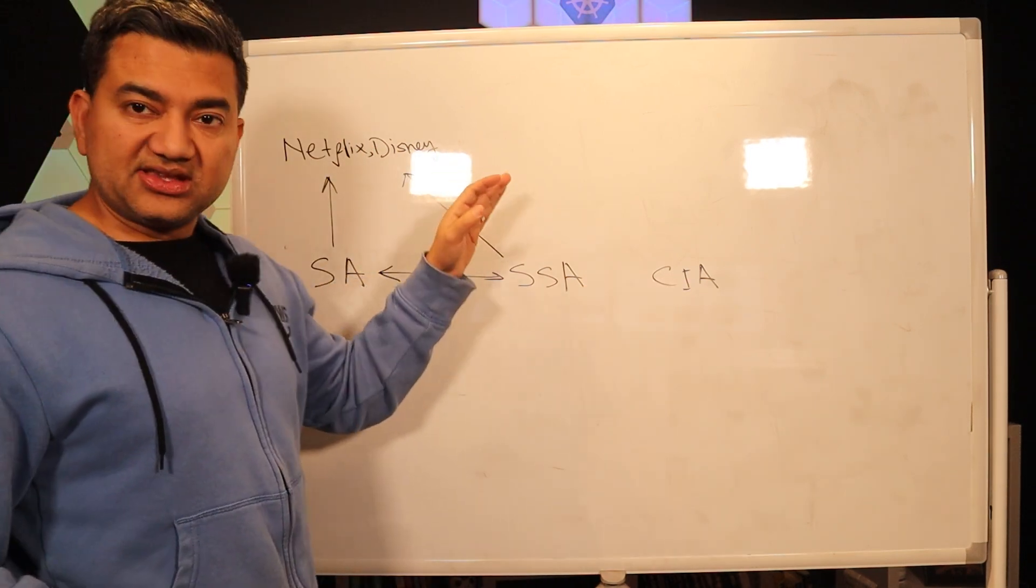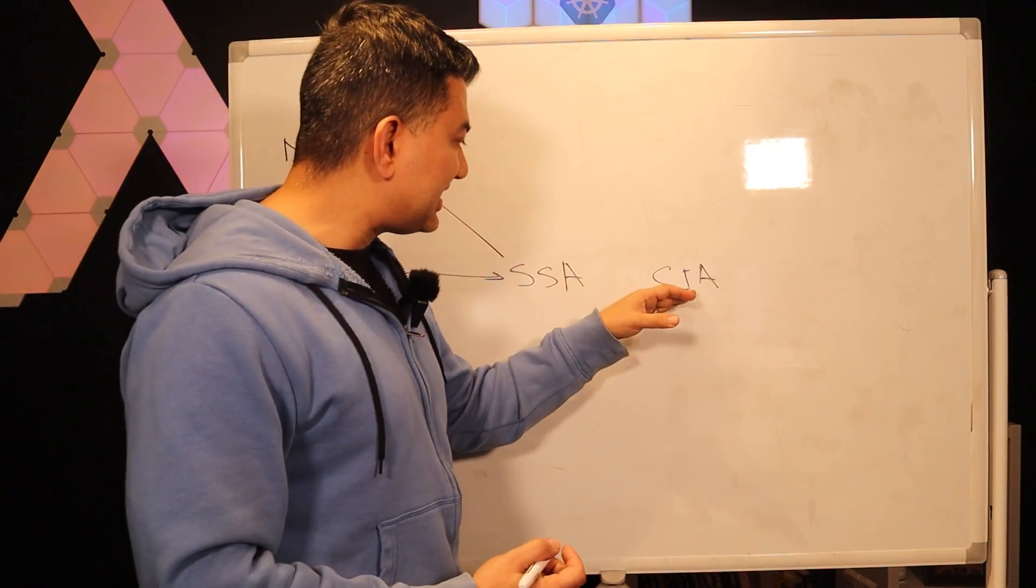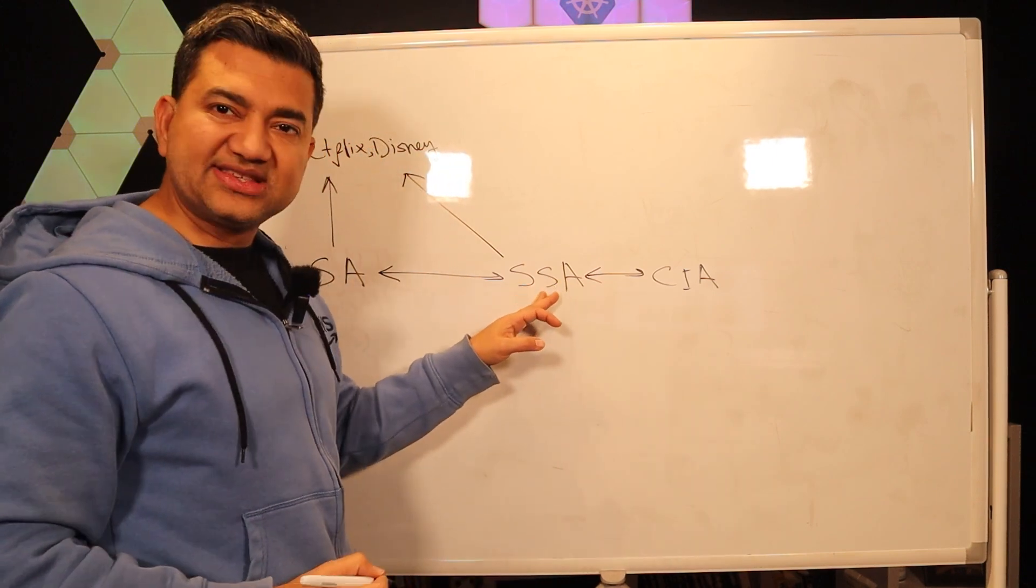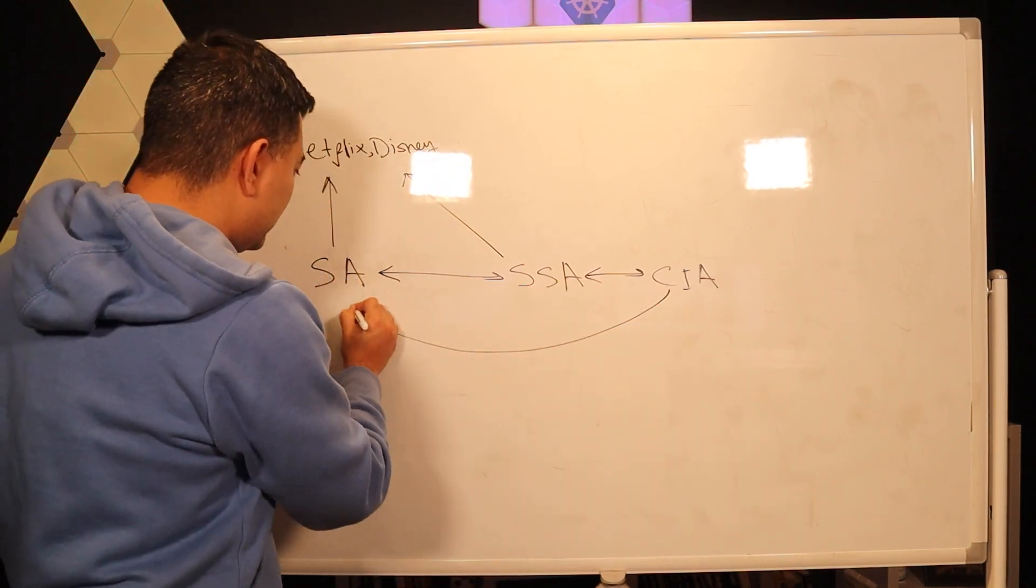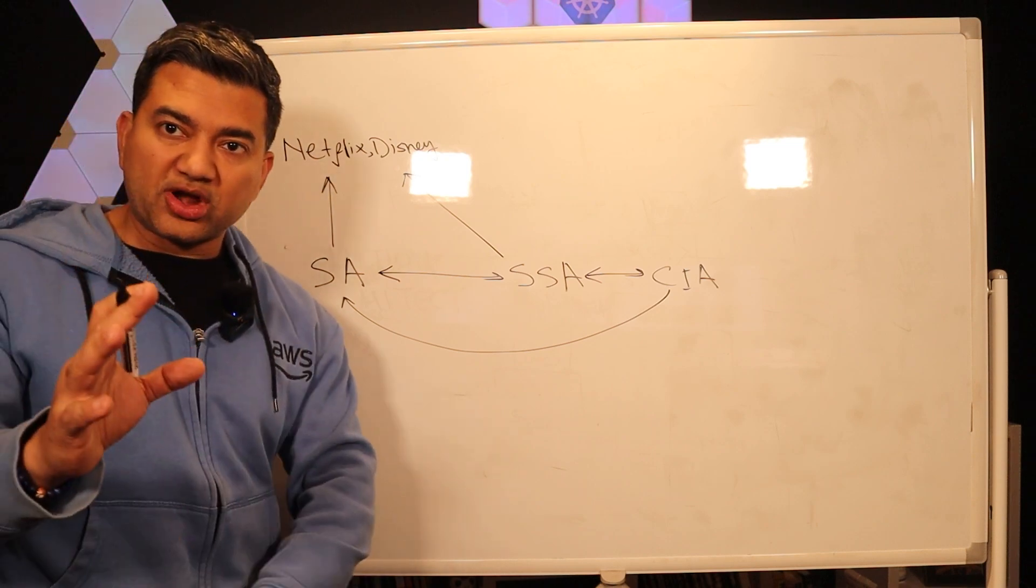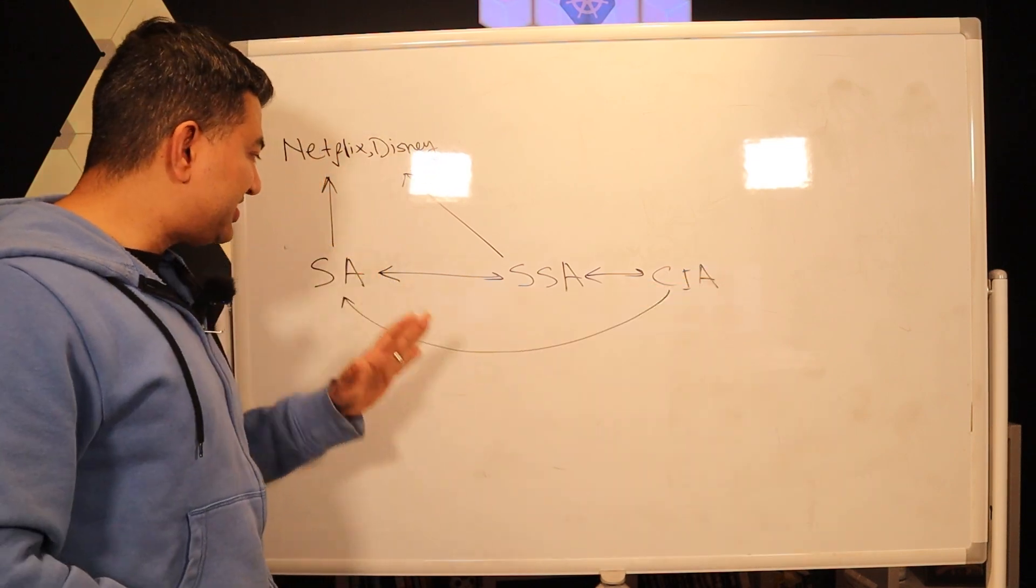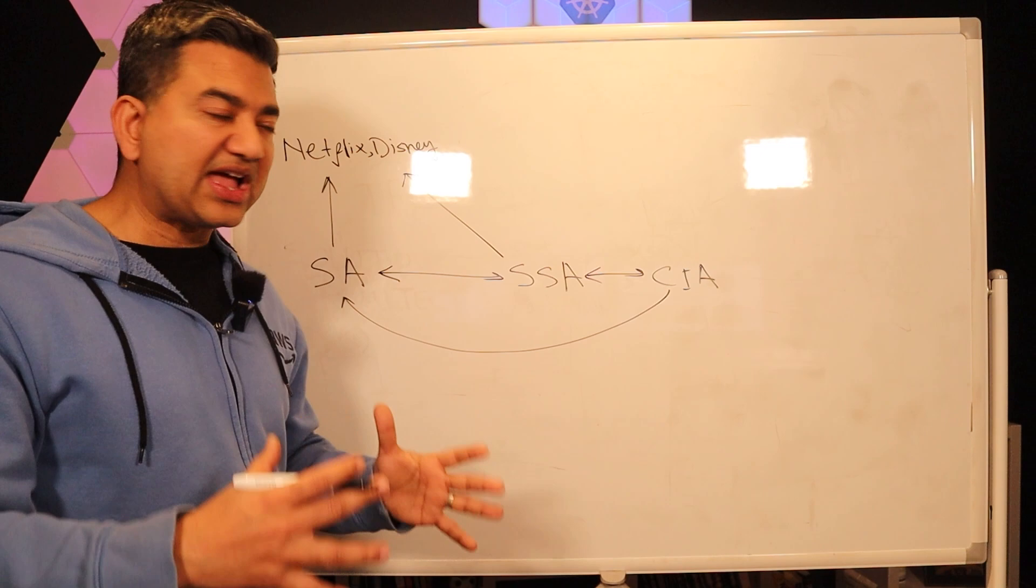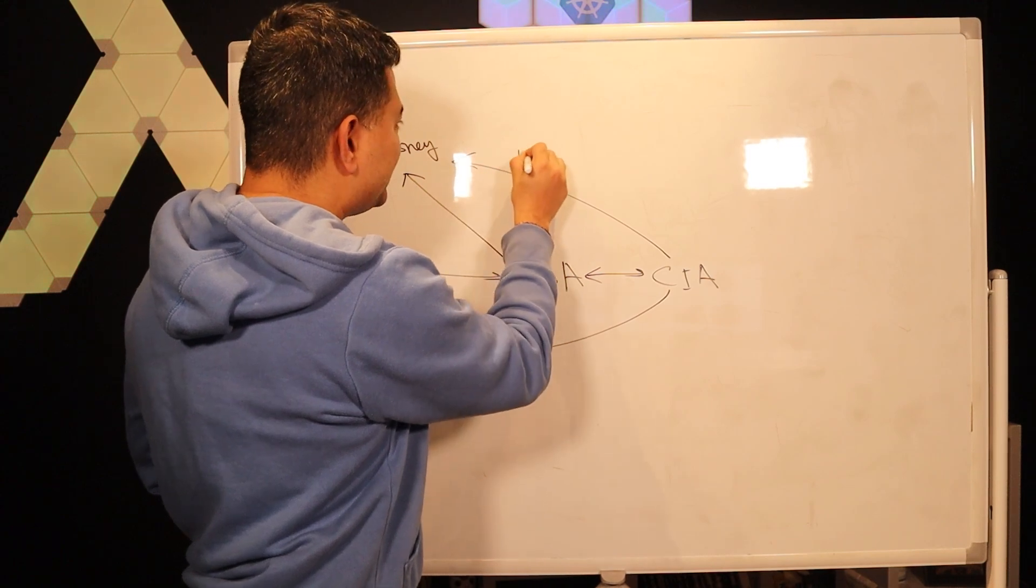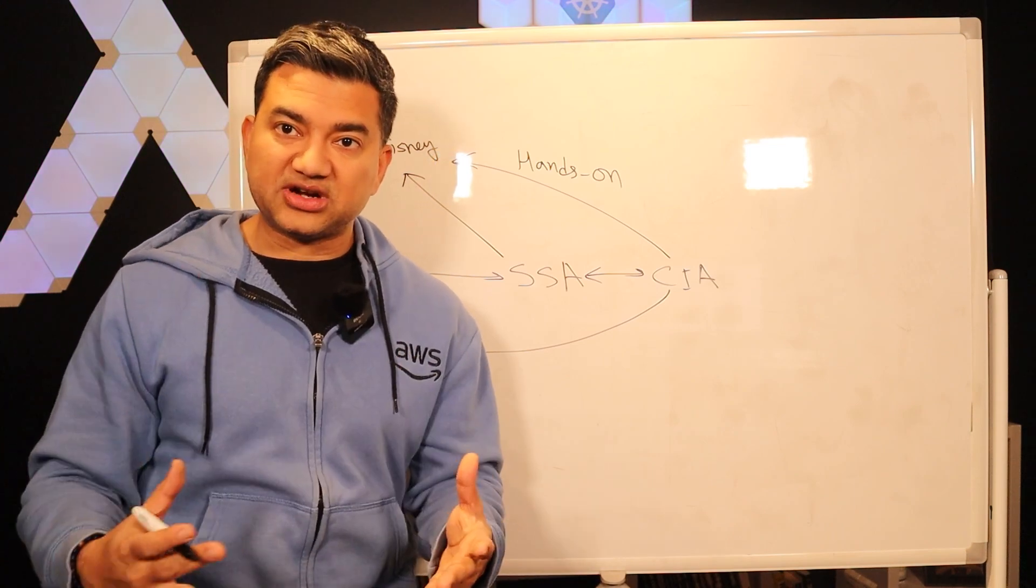So if the companies want AWS to come and code and deploy stuff for them, then they engage these CIAs. And CIAs sometimes will work with SSA, but they also will work with solutions architect, the account SA. So account SA is basically the point of contact. Either you are engaging specialist SA or infrastructure architect, you go through the account team and collaborate with the account team and work with the customer. So CIA will come and do hands-on and actually implement the architecture in the customer's AWS account.